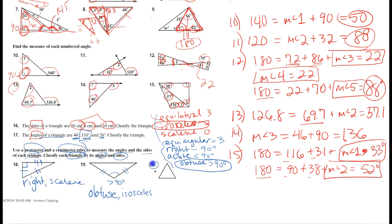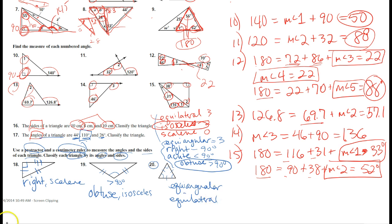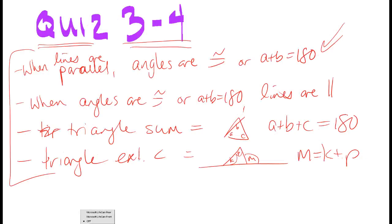Number twenty: you'll find that all of the sides are congruent and all of the angles are congruent, so it's equiangular and equilateral. Now you should be ready for Quiz 3-4.